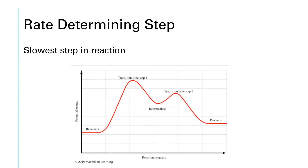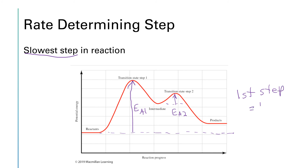In a reaction that takes place in more than one step, in order to figure out the rate law for the overall reaction, we need to figure out which one of those steps is the slowest step, because the slowest step limits how fast the reaction can go and thus determines the rate. Looking at this particular reaction taking place in two steps, there's a first activation energy and a second activation energy, and the first activation energy is much bigger than the second one. So the first step in this example would be our rate-determining step, or RDS, because the bigger activation energy means a slower reaction.